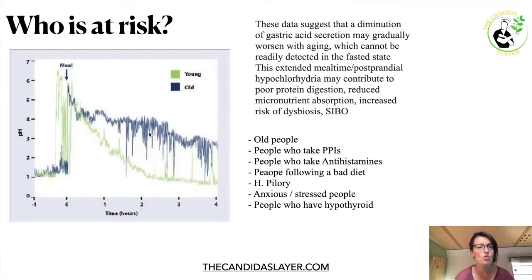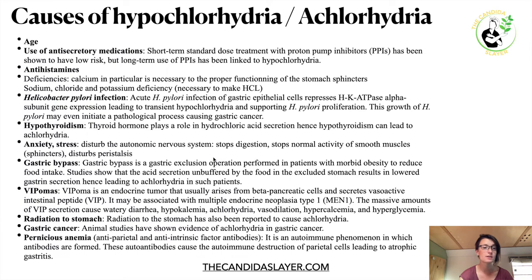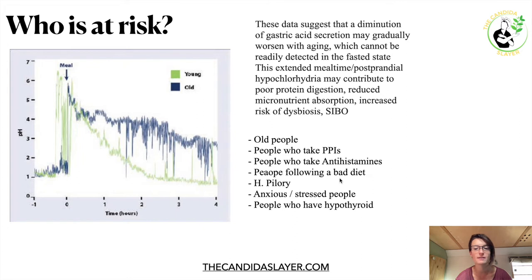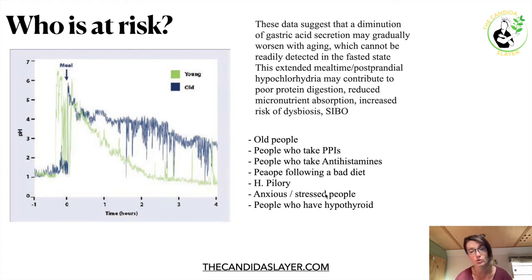Who is at risk? Basically, all the people we just described: older people, people who take PPIs or antihistamines, people following a bad diet and getting deficiencies, people who have H. pylori, anxious and stressed people, and people who have hypothyroidism.